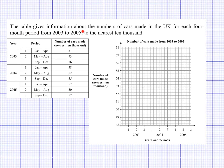In this question, the table gives information about the numbers of cars made in the UK for each four-month period. Often you will find it's in three-month periods — first quarter, second quarter, third quarter and fourth quarter — but here we've got a four-month period, so in a year there are going to be three seasons. The data runs from 2003 to 2005, to the nearest 10,000.